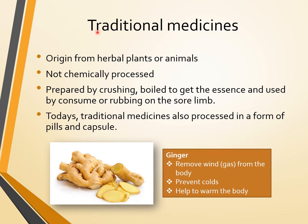Traditional medicines originate from herbal plants or animals, are not chemically processed, and are usually prepared by crushing or boiling to get the essence, then used by consuming or rubbing on the sore limb. Today, traditional medicines are also processed in the form of pills and capsules.